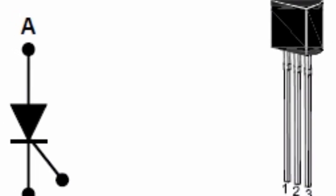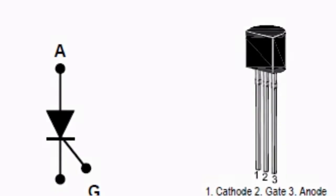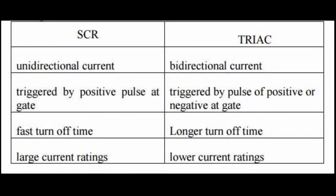SCRs are unidirectional devices that can conduct current only in one direction, but TRIAC is a bidirectional device.